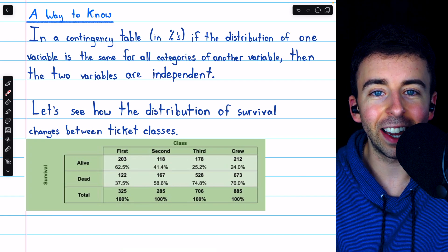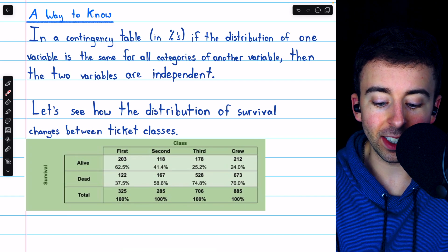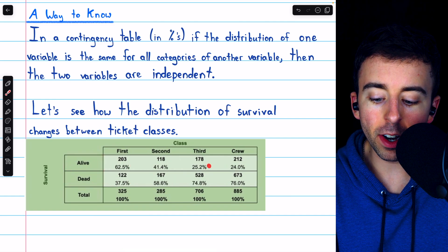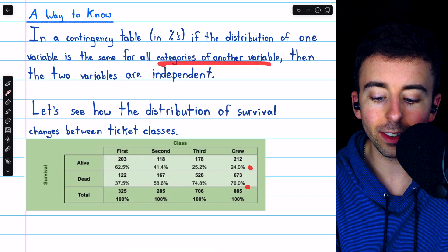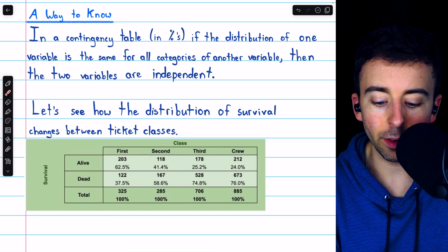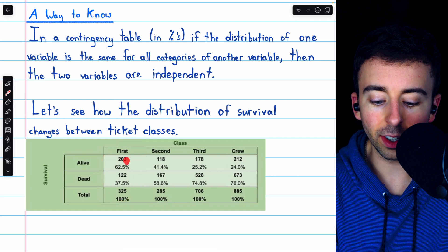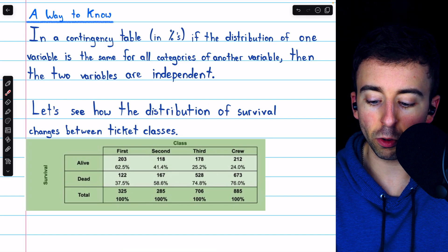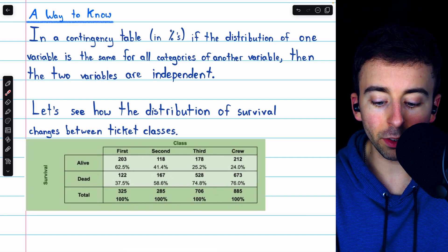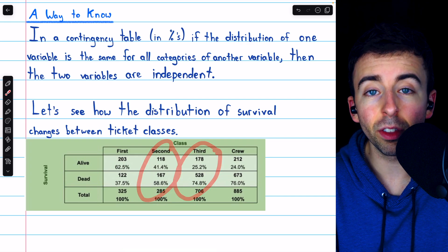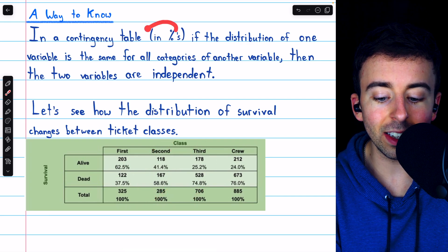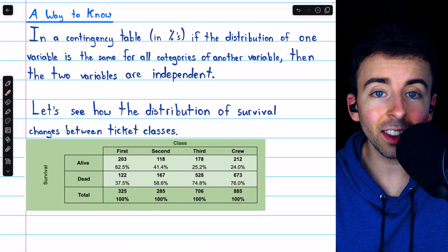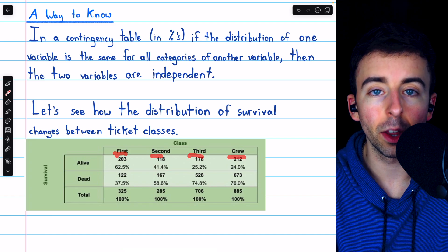Clearly, they are, because the distribution, the percents that we see of alive and dead, are not the same for all categories of the class variable. In the first class, we have 62.5% alive and 37.5% dead, whereas the percentages are drastically different for the crew class. And they're also quite different for the second and third classes as well. So in this case, we see those percents describing the distribution of alive and dead are not the same across all categories of the other variable.